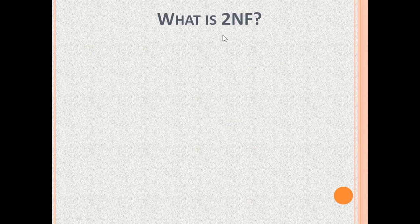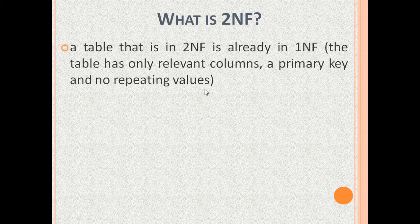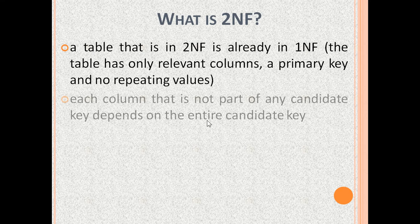What is 2NF? A table that is in 2NF is already in 1NF, meaning the table has only relevant columns, has a primary key and no repeating values. A candidate key means one or more columns whose value is unique in every row. To be in 2NF, each column that is not a part of the candidate key depends on the entire candidate key.